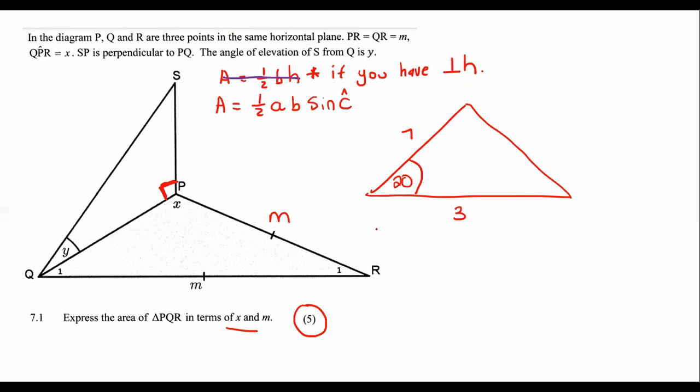Then you can say that the area is equal to a half. And then you multiply these two sides together. And then you say sin of the angle that is in between them. It must always be the angle that is in between them, like that.